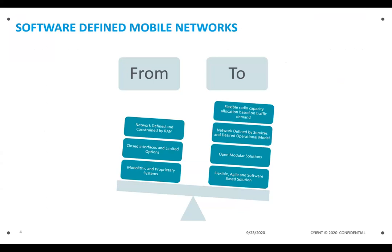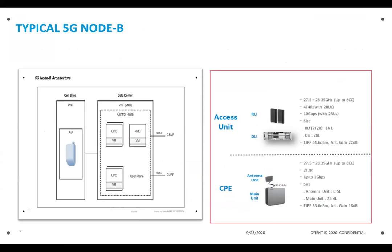Looking at the typical architecture breakdown: the monolithic architecture is there on one side, and then you have a virtualized architecture. You will have a physical network function — your AU — that is going to be on top of the tower. On the right side, you have a data center where you have multiple VNFs installed: your control plane domain and user plane domain. All these are installed as VNFs in a data center.